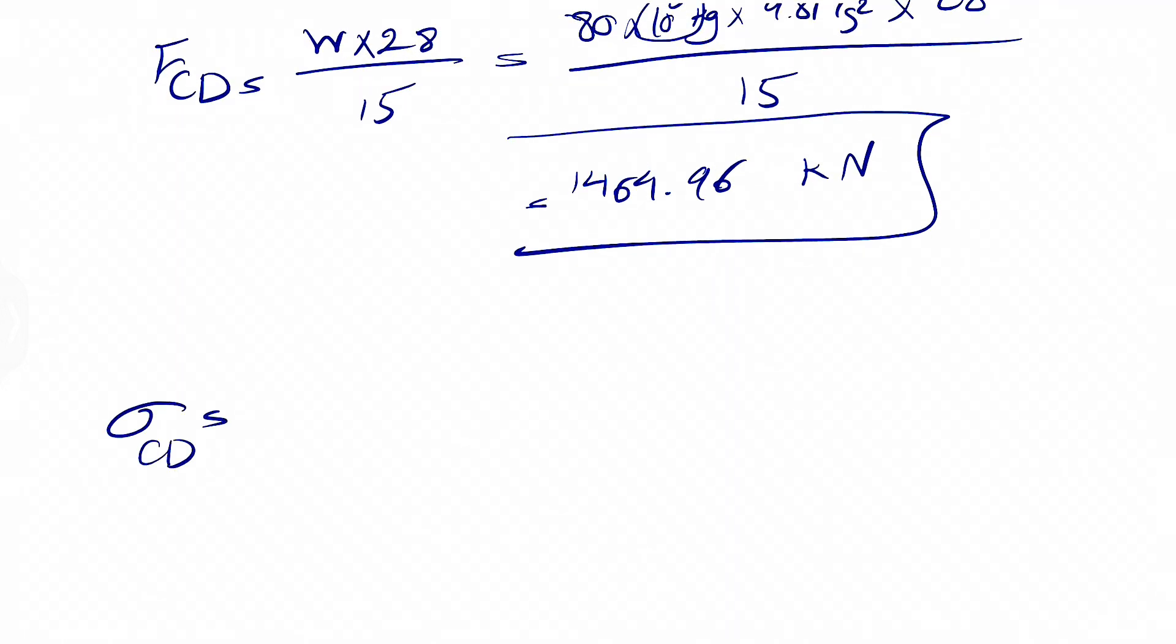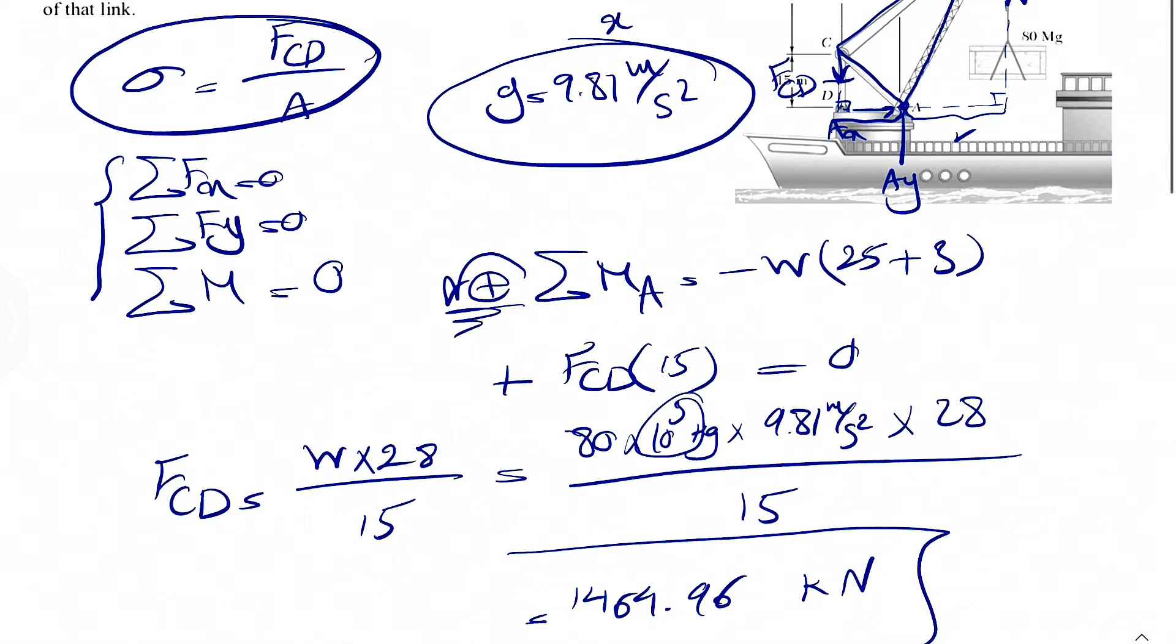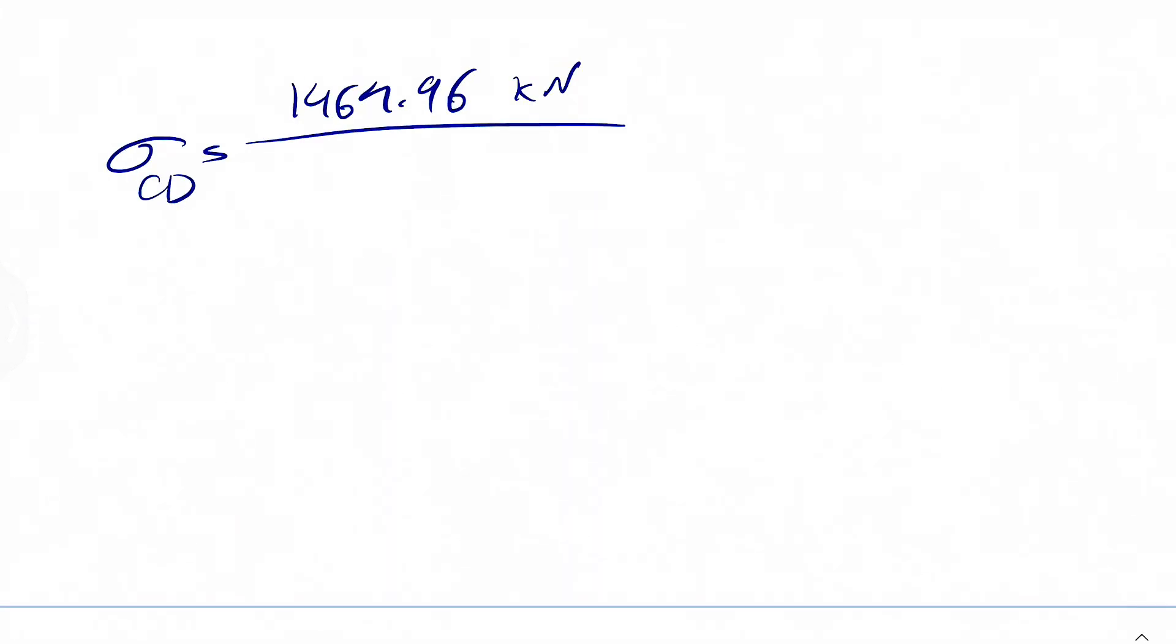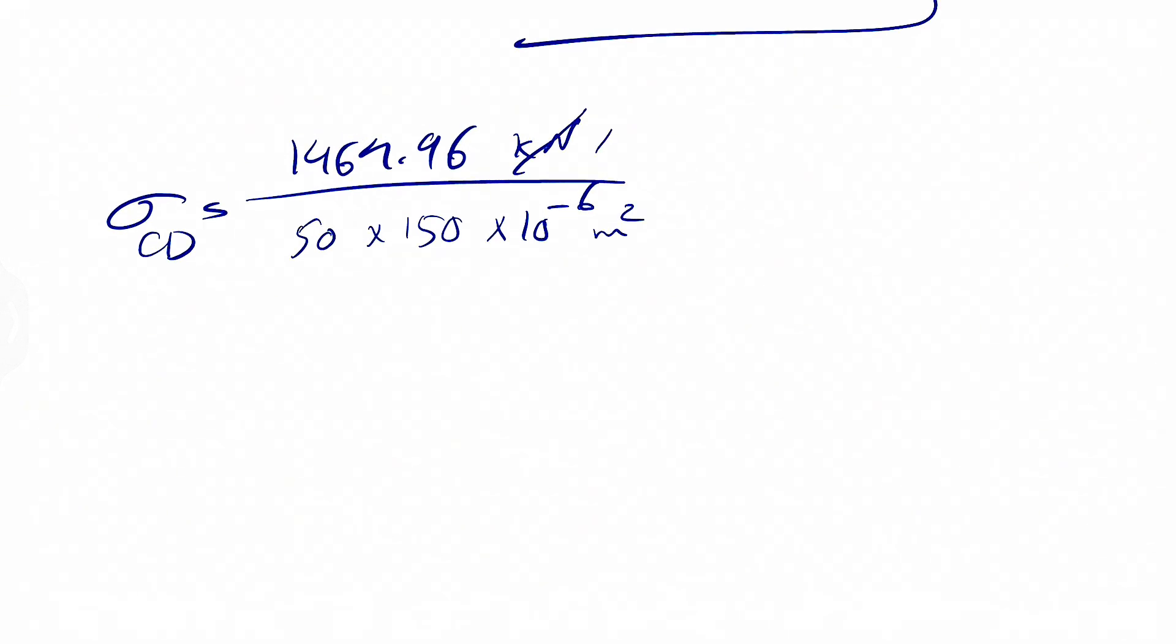So the normal stress for F_CD would be the force, which is 1464.96 kilonewton over the area. We know the dimension of the cross section 50 by 150. And we're going to divide that by 1000. So 50 times 150. And we have to divide each by 1000. Or we can multiply it by 10 to the minus 6. That's going to be meters squared. And instead of our kilonewton, we can just write it 1000 newtons. So let's see what we get. So I'm just going to keep this one as mega. So we're going to get Pascal at the end of this.